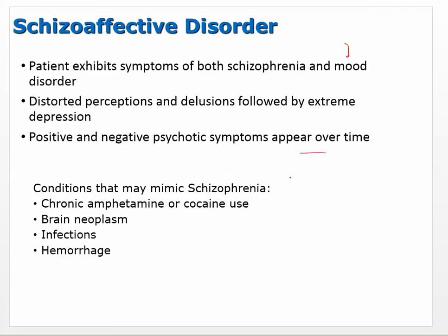There are some conditions that may mimic schizophrenia: chronic amphetamine or cocaine use, brain cancers that can mess with brain function, infections like meningitis, and hemorrhage or head injuries can all cause schizophrenia-like symptoms.